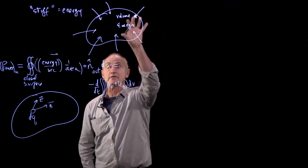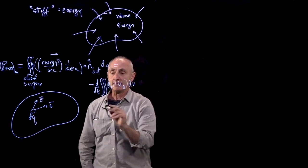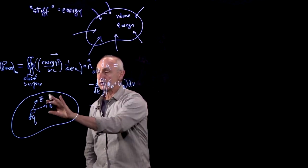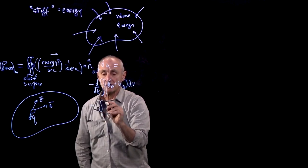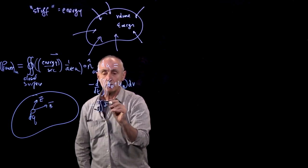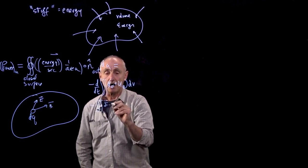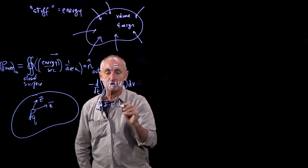dv is one way that the energy in the space can change. The other way is if there's work done on the charges by the electric field. This integral represents the rate that work was being done, work per second, on the charges in the field.